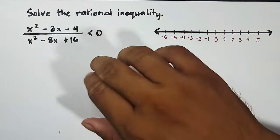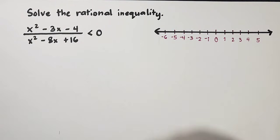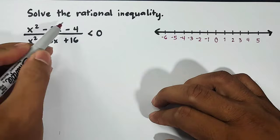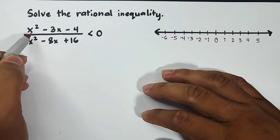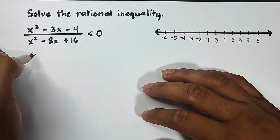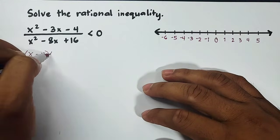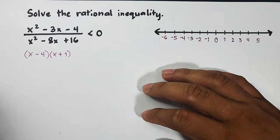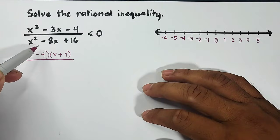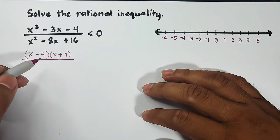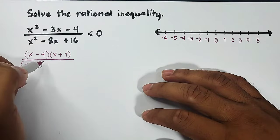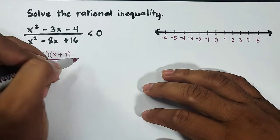So let's start. This is in general form. First thing I need to do is find the critical values or zeros, but I need to factor out my numerator and denominator because these are trinomials. The factors of x² - 3x - 4 are (x - 4)(x + 1). Next, for your denominator, x² - 8x + 16 is definitely a perfect square trinomial, meaning the factors are (x - 4)(x - 4) < 0.